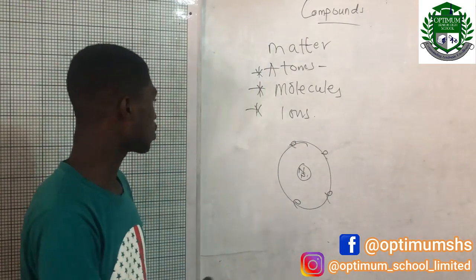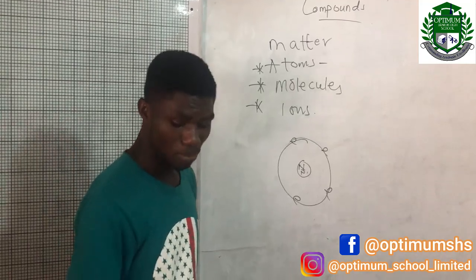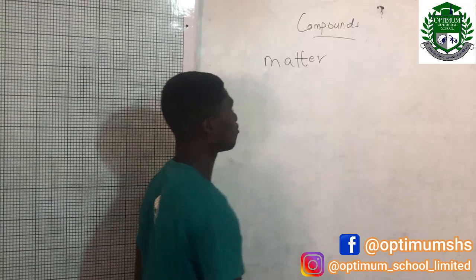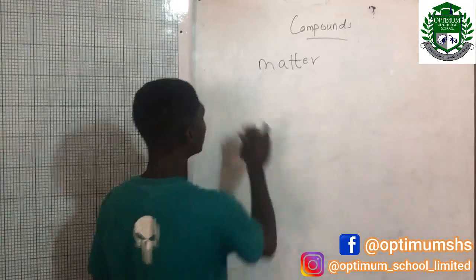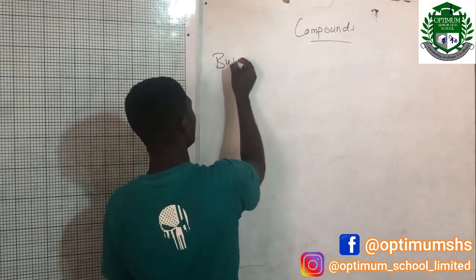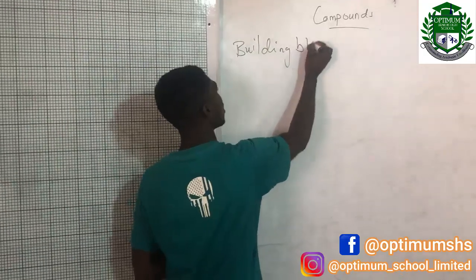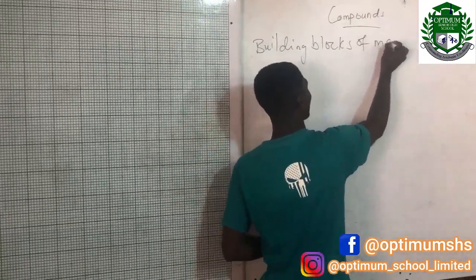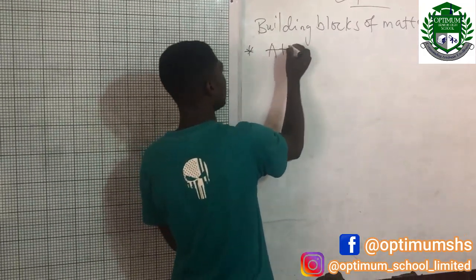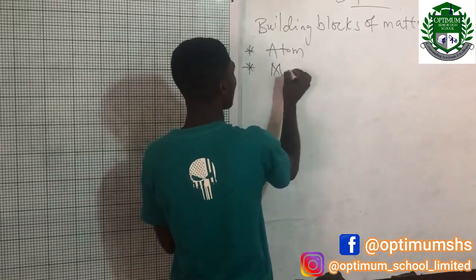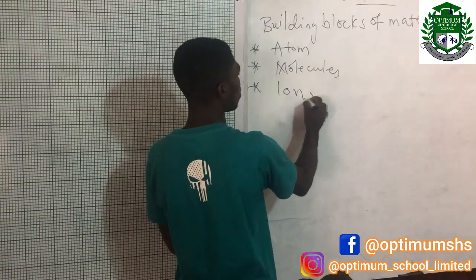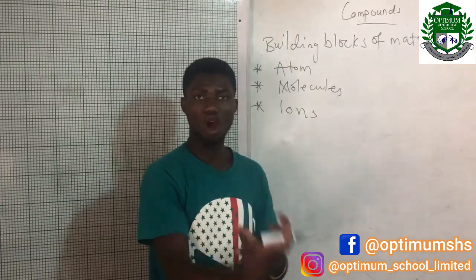So now let's move on to the states of matter. Remember, the first topic we talked about are the building blocks. Don't be confused — those are the building blocks of matter. We talked about three things: atoms, molecules, and ions. Now we are moving on to the states of matter.